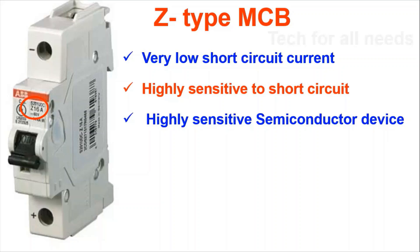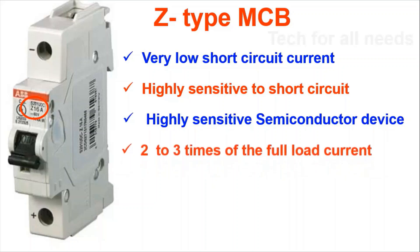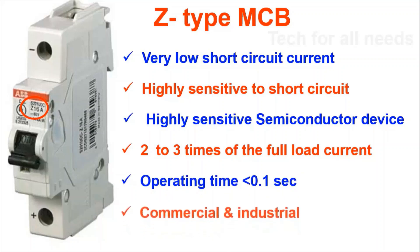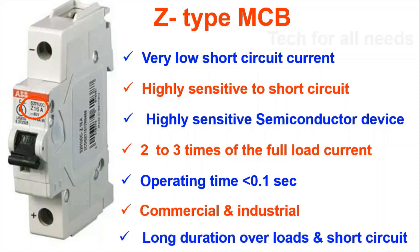The fault current can be removed from the source quickly with an operating time of 0.1 seconds. K type is used for commercial and industrial purposes. It can withstand long duration overload and short circuit conditions.